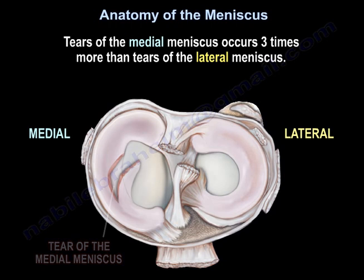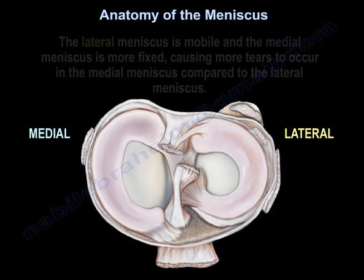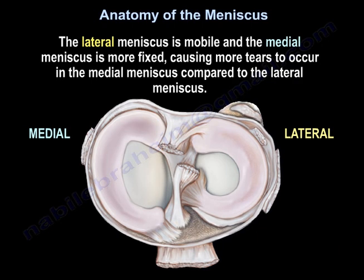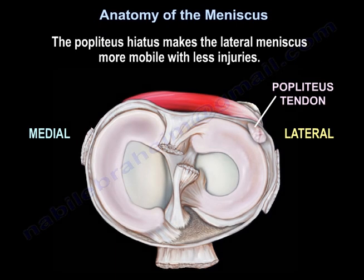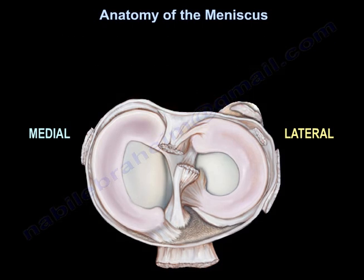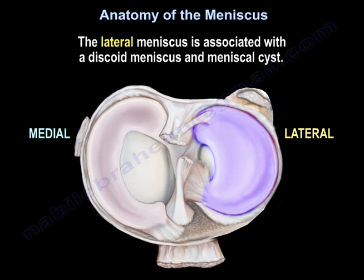Tears of the medial meniscus occur three times more often than tears of the lateral meniscus. The lateral meniscus is mobile while the medial meniscus is more fixed, causing more tears to occur in the medial meniscus. The popliteus hiatus makes the lateral meniscus more mobile, resulting in fewer injuries. The lateral meniscus is also associated with discoid meniscus and meniscal cysts.